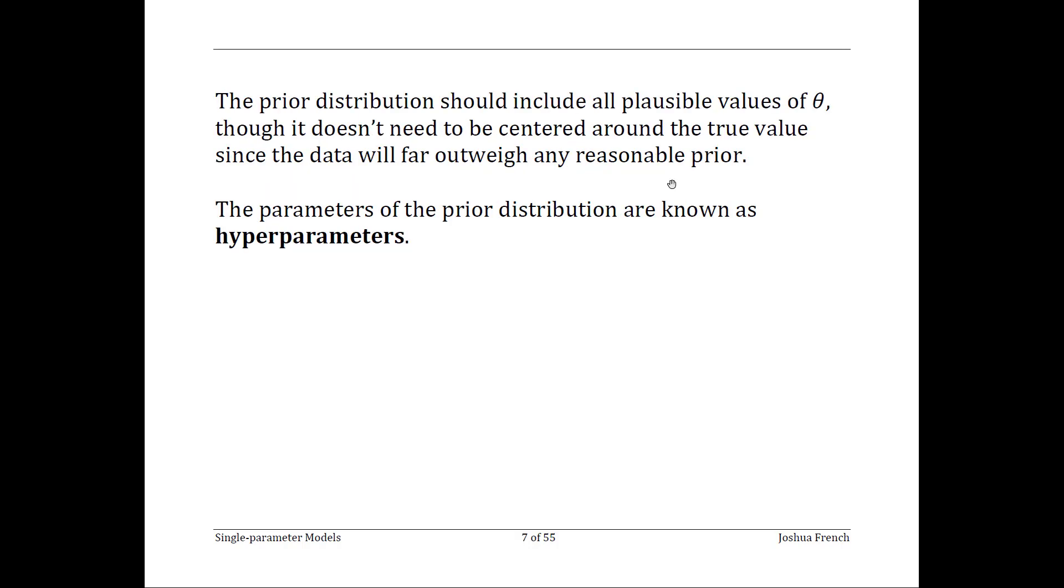A key aspect of any prior distribution is that a prior distribution should include all possible values of the parameter. Don't stress too much about centering the prior distribution exactly at the true value of the parameter. As long as the prior isn't unreasonably strong, the data should far outweigh the prior in determining the posterior distribution.